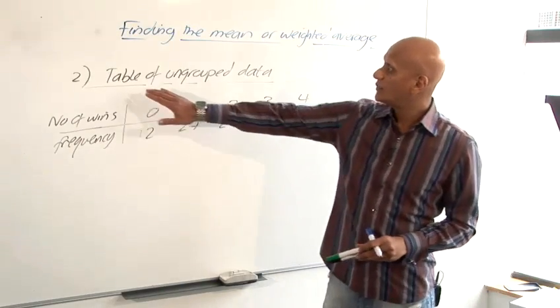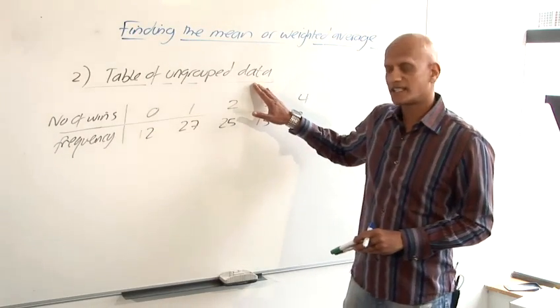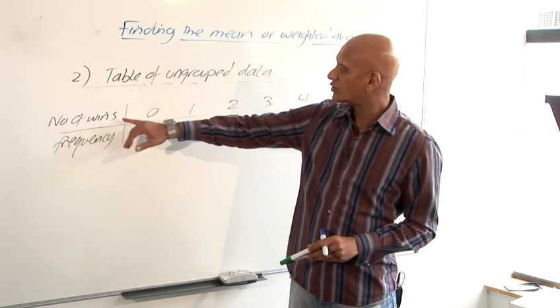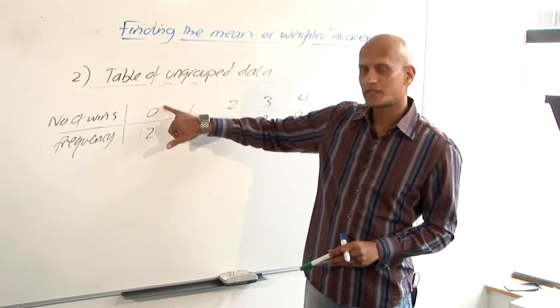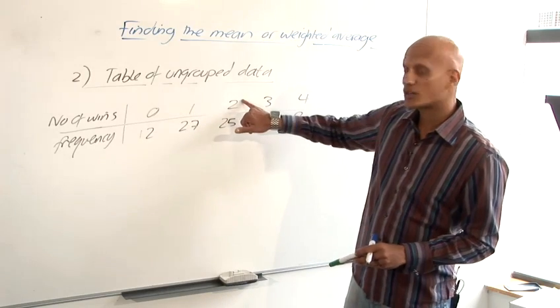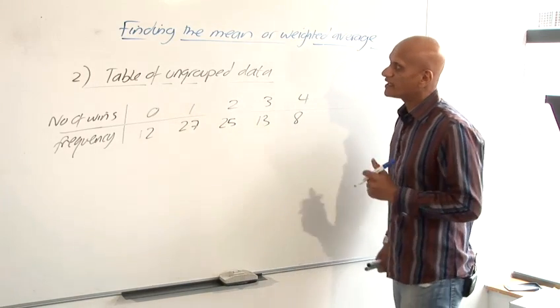So case two will be a table of ungrouped data. So in this case, we've got poker players taking part in the tournament. And these are the number of wins. So 12 people didn't get any wins. 27 people managed one win. 25 people got two wins and so on. So you want to find the mean of this data.